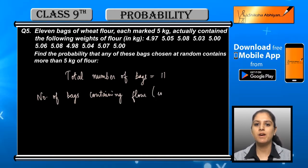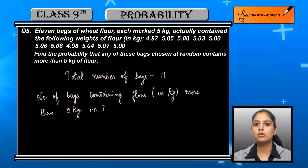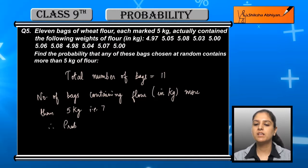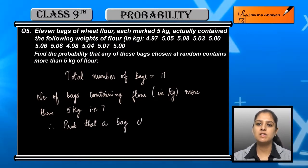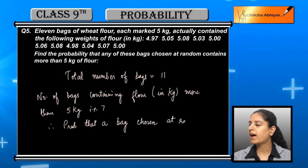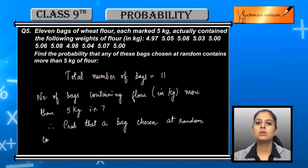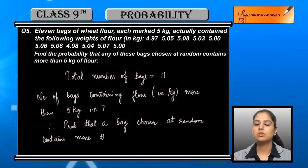The number of bags containing flour more than 5 kg — counting from the 11 bags, we get 7. So the probability that a bag chosen at random contains more than 5 kg of flour is equal to 7 upon 11, because 7 is the total number of bags with more than 5 kg, and 11 is the total number of bags.